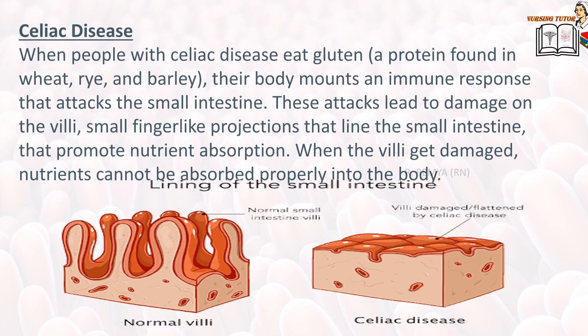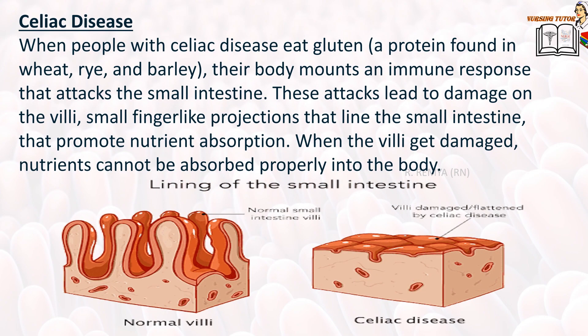When people with celiac disease eat gluten, a protein found in wheat, rye, and barley, their body mounts an immune response that attacks the small intestine. These attacks lead to damage on the villi — small finger-like projections that line the small intestine and promote nutrient absorption. When the villi get damaged, nutrients cannot be absorbed properly into the body.